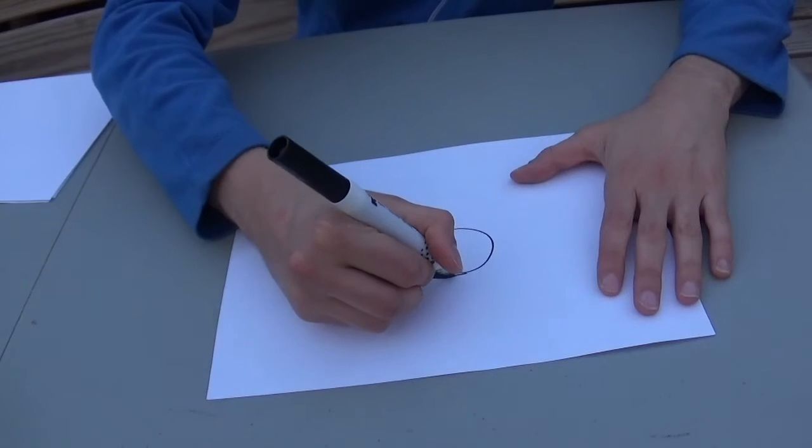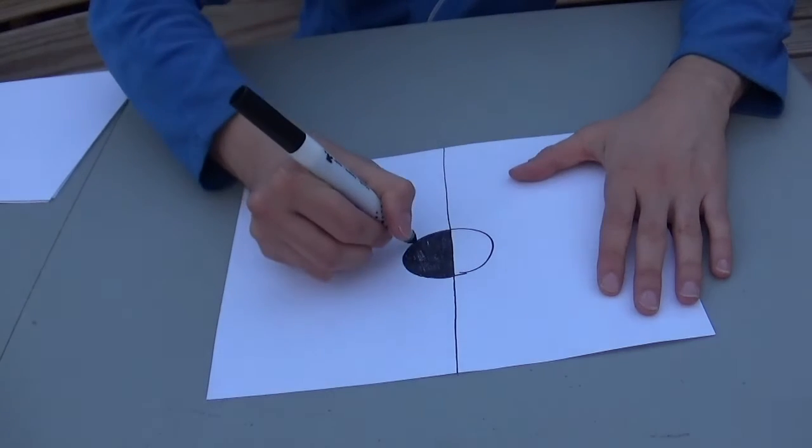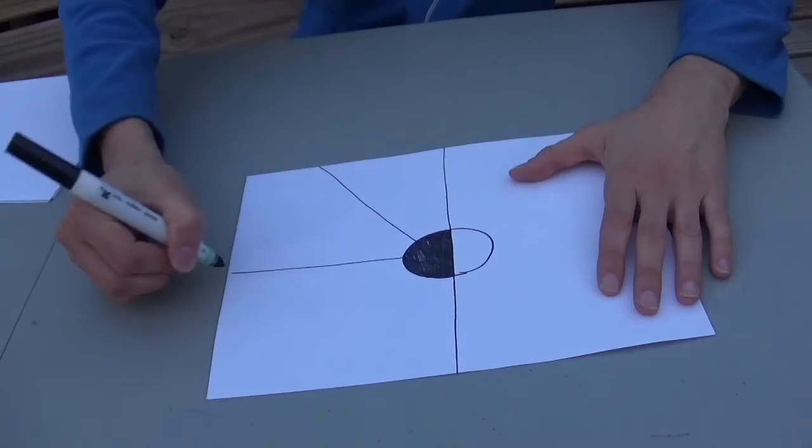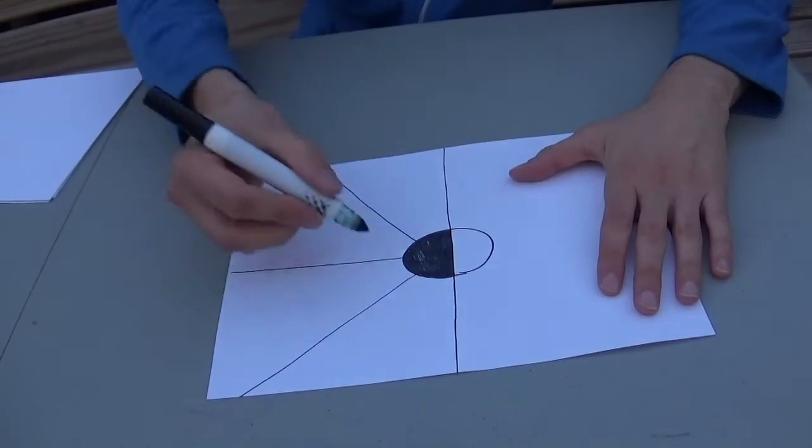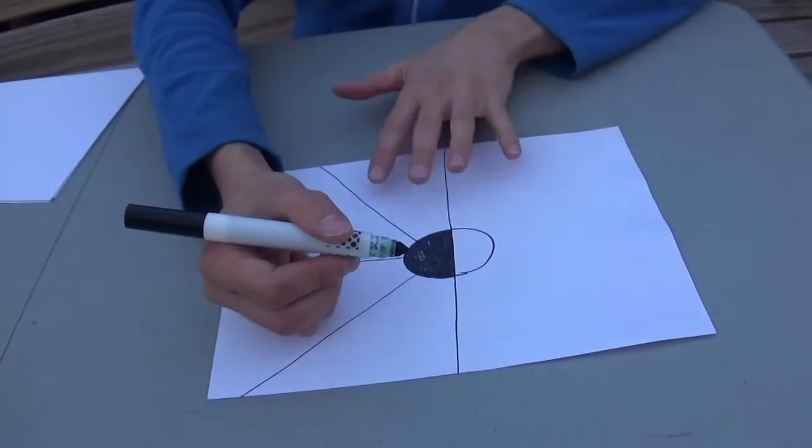I'm going to start with a line going up here, and there, and there, and there. Now I want to imitate the lines that are radiating out on this half of my paper on the other half.